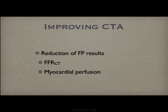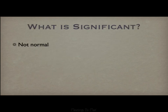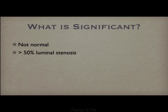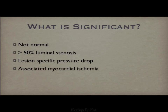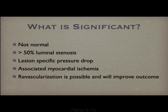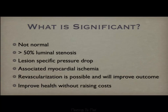Myocardial perfusion imaging with CT addresses the demand side. From the standpoint of asking what is a significant coronary lesion, the first question should be: does the image appear normal or not? Then we might extend it to say a significant lesion is one greater than 50% stenosis. More specifically, a lesion should have a specific pressure drop. Taking it to the next level, it should only be a lesion associated with myocardial ischemia. And one could argue what is relevant is whether revascularization is possible and, if it occurs, whether the patient's outcomes will improve. Ultimately, we'd like to know whether we are actually improving the patient's health without substantial increase in costs.